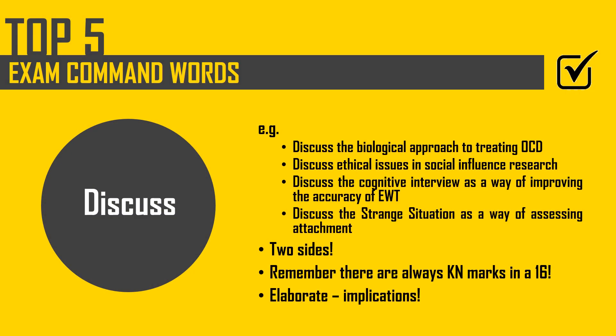Number 3 is 'discuss'. It can be a little bit confusing, but if you see that word, you're thinking about a discussion — two sides. So if it said 'discuss animal rights', you'd give two sides of that argument. 'Discuss the biological approach to treating OCD' — two sides. If you see it in a 16-marker or an 8-marker, treat it as a normal essay, remember there are knowledge marks in there, but give two sides, give elaboration, maybe talk about the implications and real-world relevance.